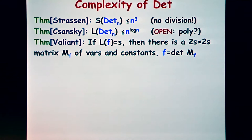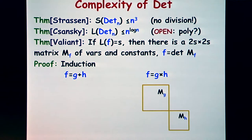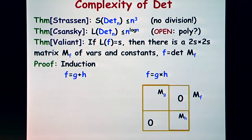Almost everything about formulas you prove by induction on their structure. A formula's top gate is either multiplication or addition: either g plus h or g times h. Assuming we already have matrices whose determinants are g and h respectively, how do we get a matrix whose determinant is g times h? You just fill zeros everywhere else — it's a block diagonal matrix — and its determinant is obviously the product. That's easy.